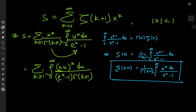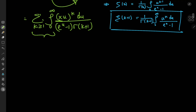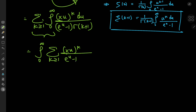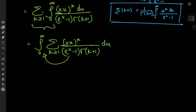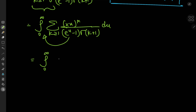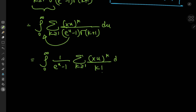Because the x to the k divided by gamma(k+1) term is independent of u, we can slip it inside the integration operator. The structure is convergent because of the exponential function in the denominator and the factorial. So we can switch the order of integration and summation, writing this as the integral from 0 to infinity of 1 over e to the u minus 1, times the sum over positive integers k of (xu) to the k divided by k factorial, du.